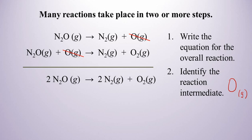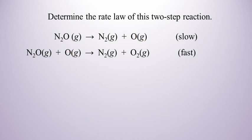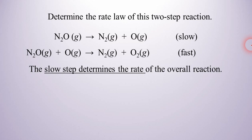Now it would be nice if we could take this reaction mechanism and use that to determine the rate law — and we actually can do that. The only way we can do that though is to know which of the two steps is the slow step. Let's take this same reaction mechanism, add some more information, and determine the rate law. Let's say the first step is the slow step. The slow step determines the rate of the overall reaction.